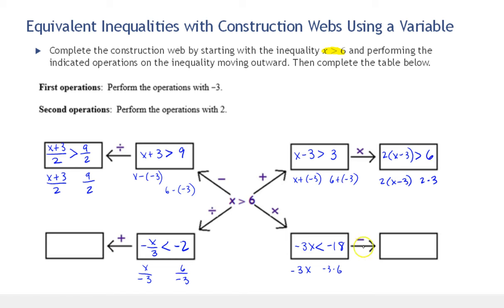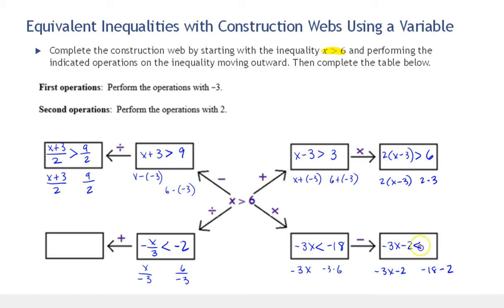Now we're going to subtract 2 from both sides. So we have negative 3x minus 2 on the left and negative 18 minus 2 on the right. Our inequality is negative 3x minus 2 is less than negative 20.